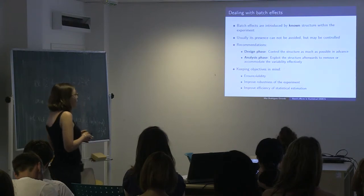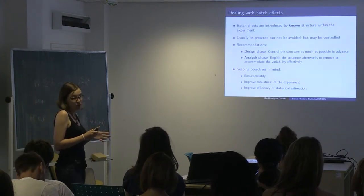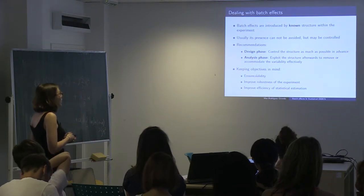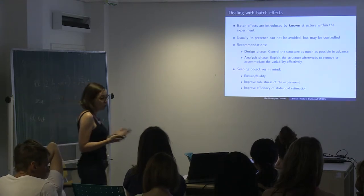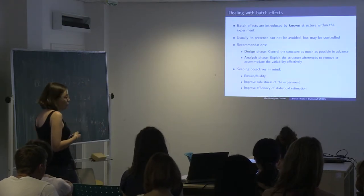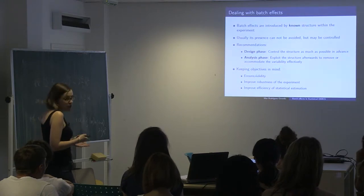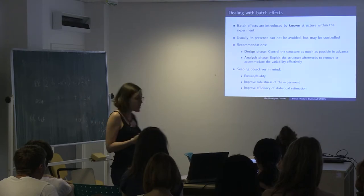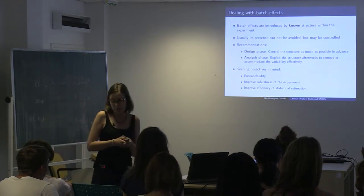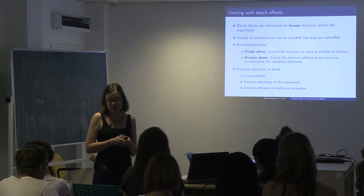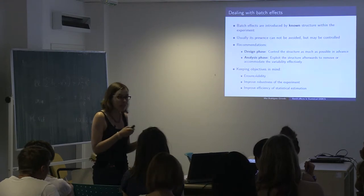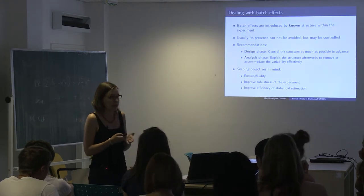Usually the presence of batch effects cannot be avoided but can be controlled in two different ways: first in the design phase, and second in the analysis phase, where we exploit the structure of the data to remove or accommodate batch effects. We do this to avoid bias, ensure robustness of the experiment, obtain comparable results with other studies, and to improve efficiency — meaning getting the best precision with the minimum number of samples.